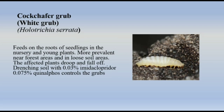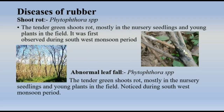Cockchafer grub / White grub (Holotrichus serrata): Feeds on the roots of seedlings in the nursery and young plants. More prevalent near forest areas and in loose soil areas. Affected plants droop and fall off. Drenching soil with 0.03% and 0.075% quinolphos controls the grubs.